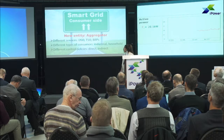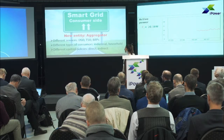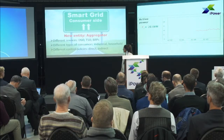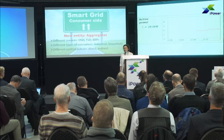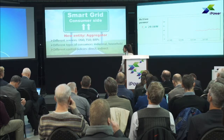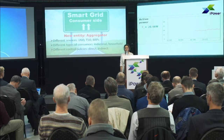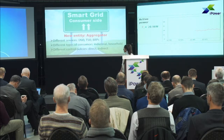This requires new entities, and one of them is the Aggregator. A general definition I can give for the Aggregator is the entity which is placed between a number of consumers and a grid operator to handle the services that can be offered by these consumers to the grid. The Aggregator may want to provide services to the DSO at the distribution grid level, to the TSO, or to the BRPs.